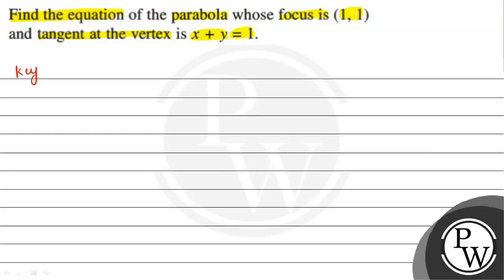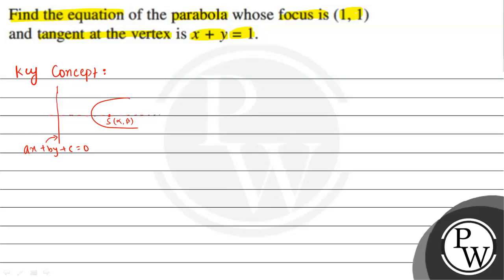The key concept to solve this question — suppose we have a parabola, its directrix is a line whose equation we consider as ax plus by plus c equal to 0. The horizontal line is the axis of the parabola, and we consider a point (alpha, beta) as the coordinates of the focus.